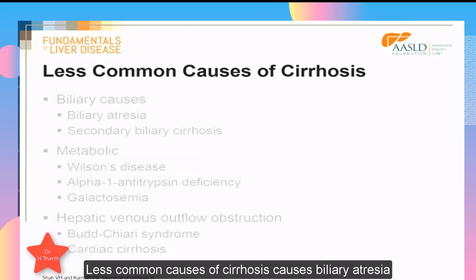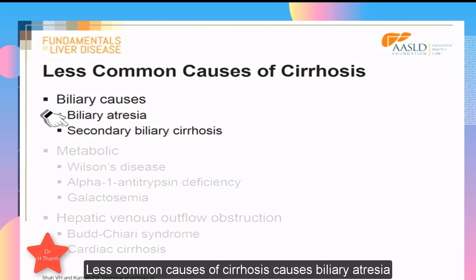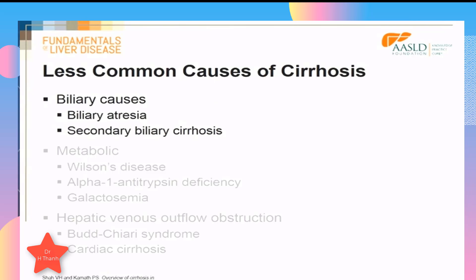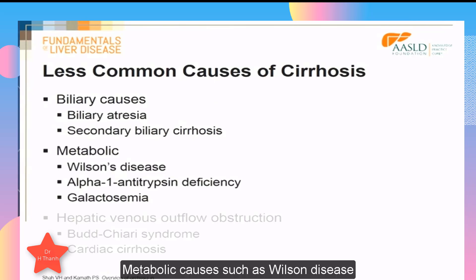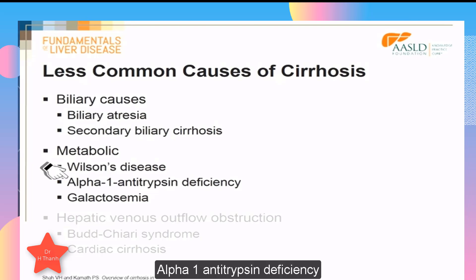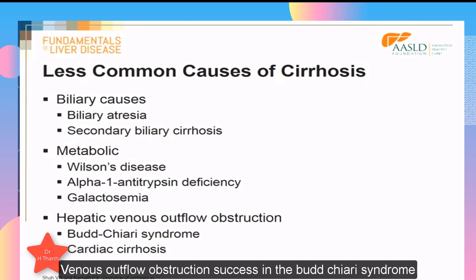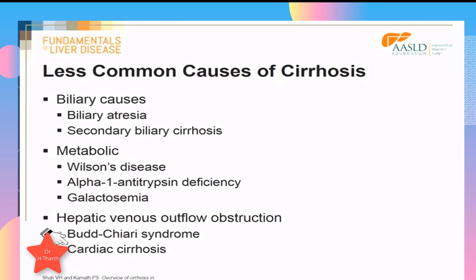Less common causes of cirrhosis are biliary causes such as biliary atresia and secondary biliary cirrhosis, metabolic causes such as Wilson disease, alpha-1 antitrypsin deficiency, and galactosemia, and hepatic venous outflow obstruction, such as in the Budd-Chiari syndrome or with cardiac cirrhosis.